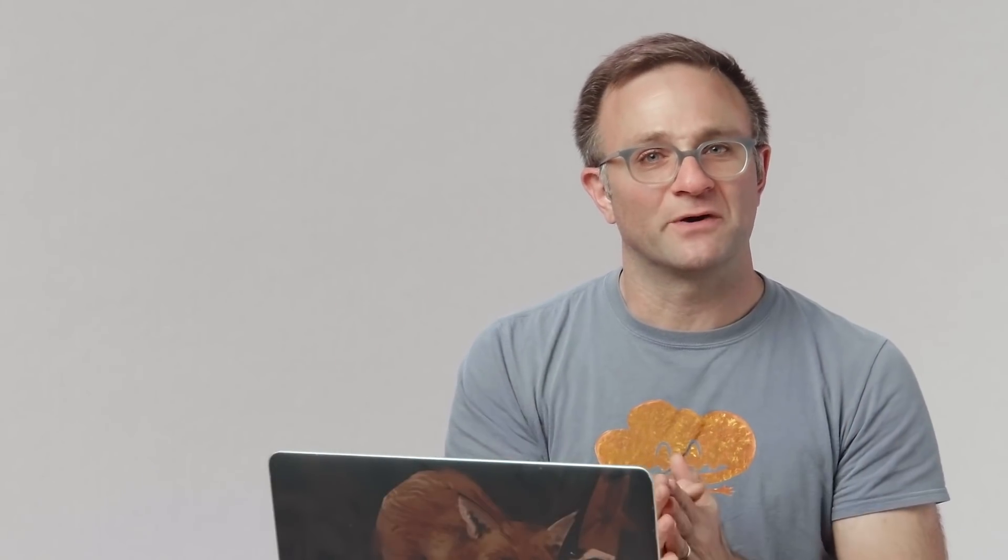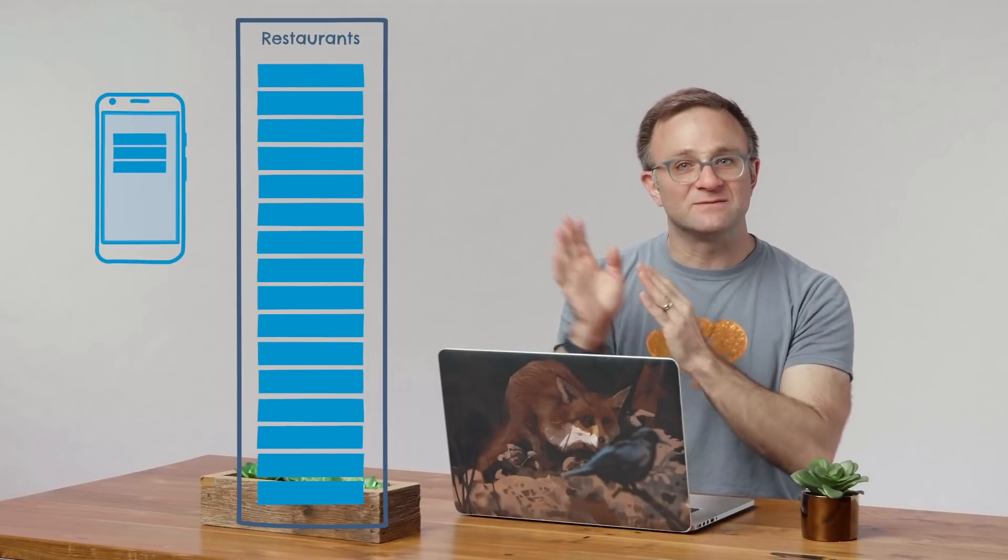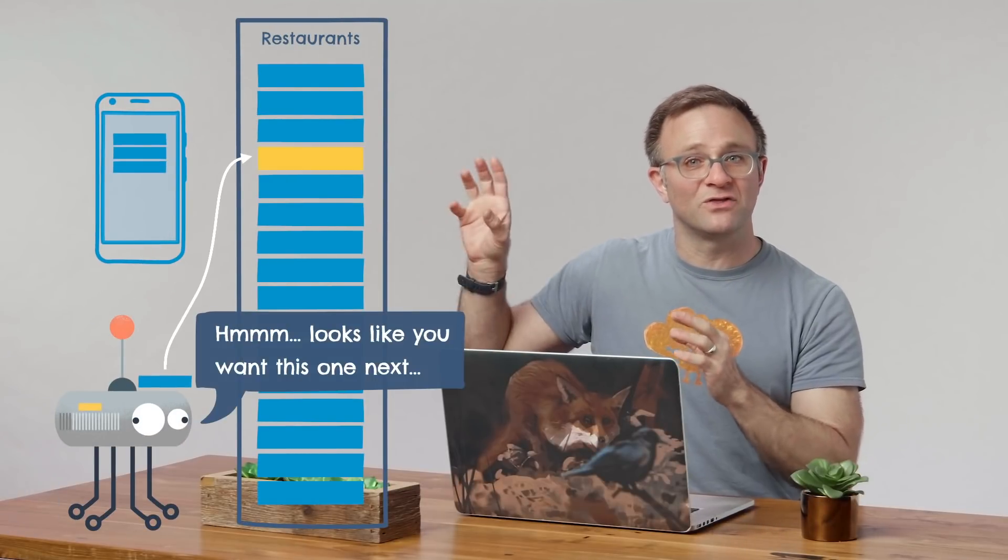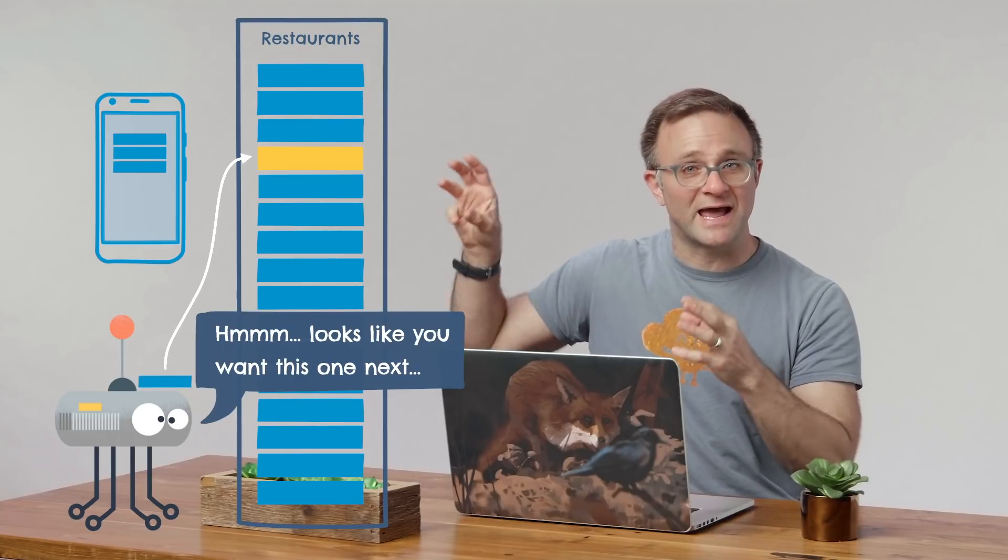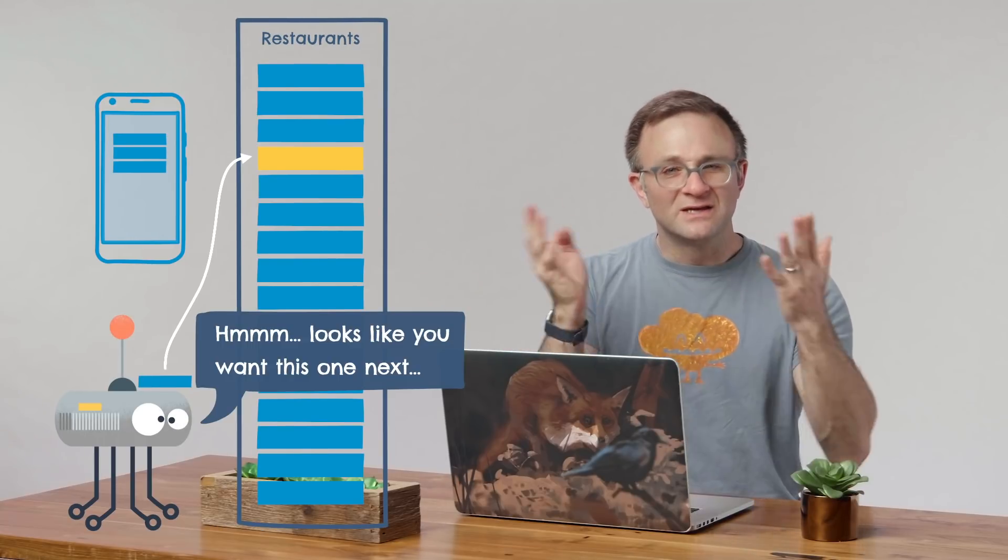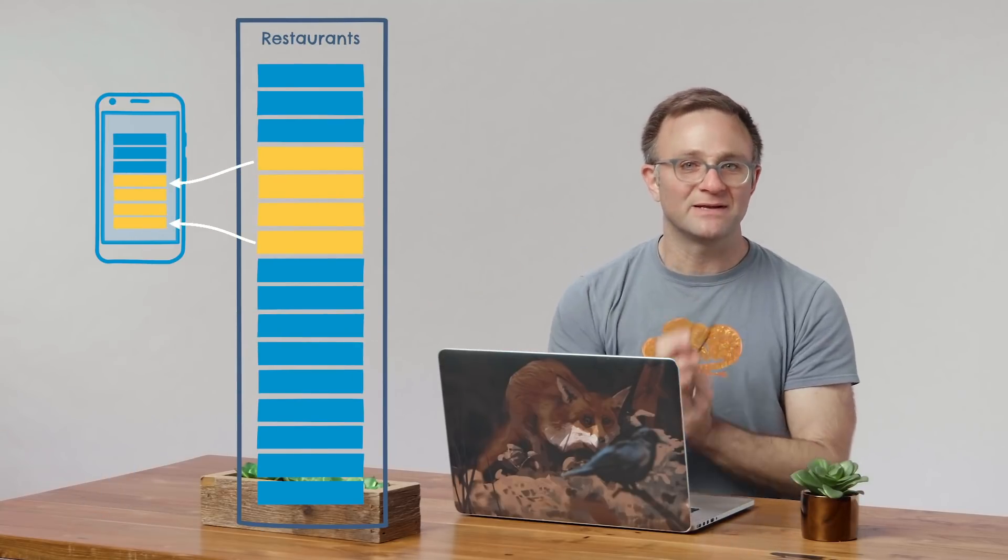So instead, what the Firestore library lets you do is pass in an existing document as the start after parameter instead. Now, Cloud Firestore will analyze that document and figure out exactly what values it should be searching for. And it's smart enough that if it sees multiple documents with the exact same values, it will start with the one with the document ID that's right after the document you specified. So you don't need to worry about accidentally skipping documents.